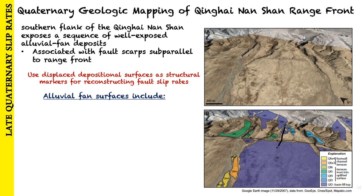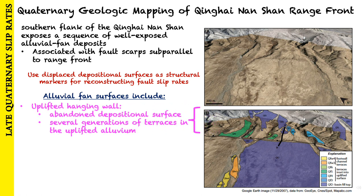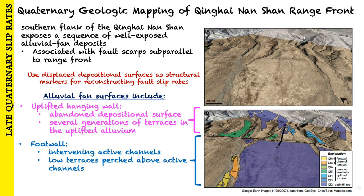Several alluvial surfaces include abundant depositional surfaces in the uplifted hanging wall of the fault with several generations of terraces, and in the footwall there are intervening active channels with low terraces perched above them. They focus on the QF2 surface because it is present in both the footwall and hanging wall blocks, and therefore provides a useful structural marker.